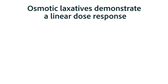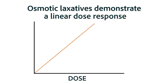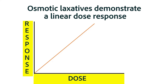Osmotic laxatives generally demonstrate a linear dose response. What does a linear dose response mean in pharmacology? It simply means that if you took a graph of the amount of laxative versus the effect, the more you take, the greater the effect. So if the effect of a dose was not quite enough, the person knows to simply take more of the medication the next time.